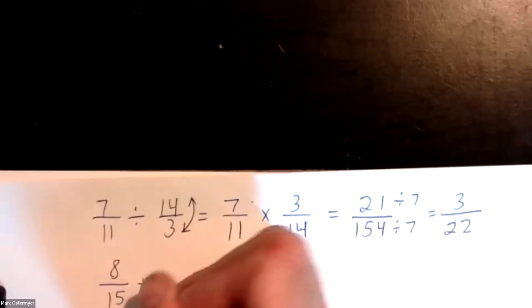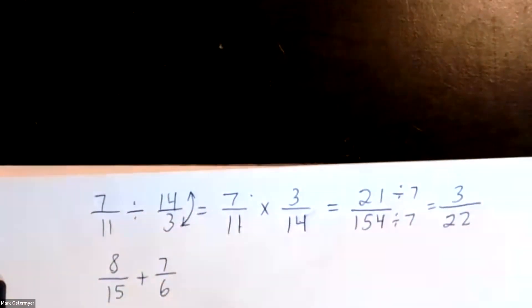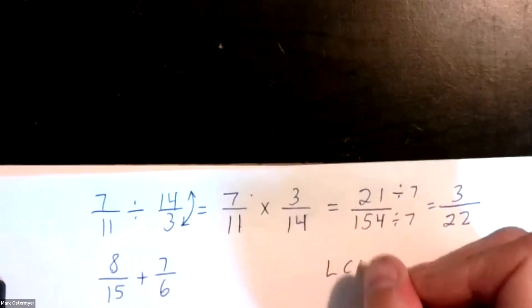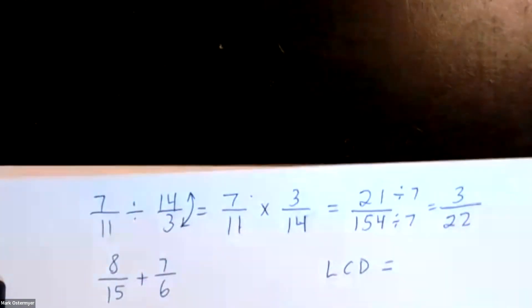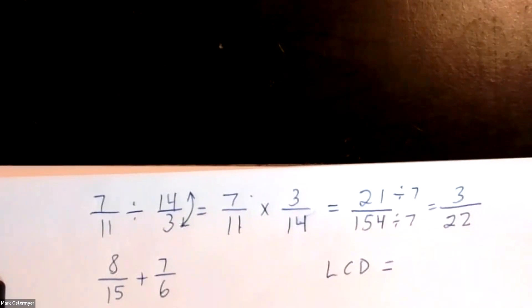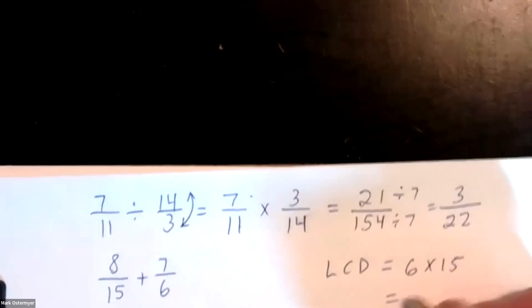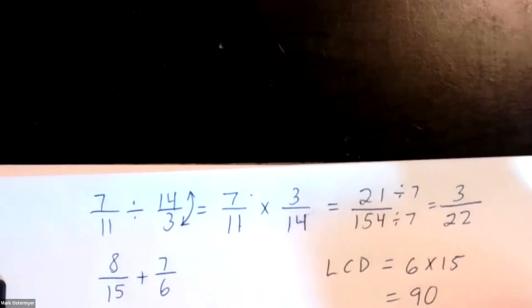Number twelve: eight fifteenths plus seven sixths — need a common denominator. What is the least common denominator of six and fifteen? The smallest number that six and fifteen both divide into would be thirty. If you can't think of thirty, you can always just multiply the denominators together and get ninety — that's not the least common denominator but it is a common multiple.